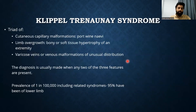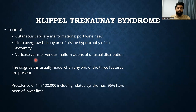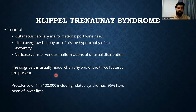A brief discussion regarding Klippel-Trénaunay syndrome: it consists of a triad of cutaneous capillary malformations such as port-wine stain, limb overgrowth which may be bony or soft tissue hypertrophy, and varicose veins or venous malformation with unusual distribution. The diagnosis is usually made when any 2 of these 3 features are present, and there is a prevalence of 1 in 100,000 including related syndromes. In this patient, it is of the upper limb, which is very, very rare.